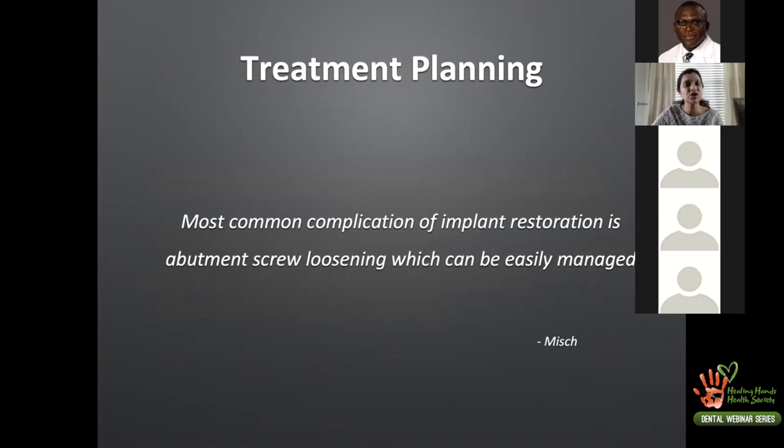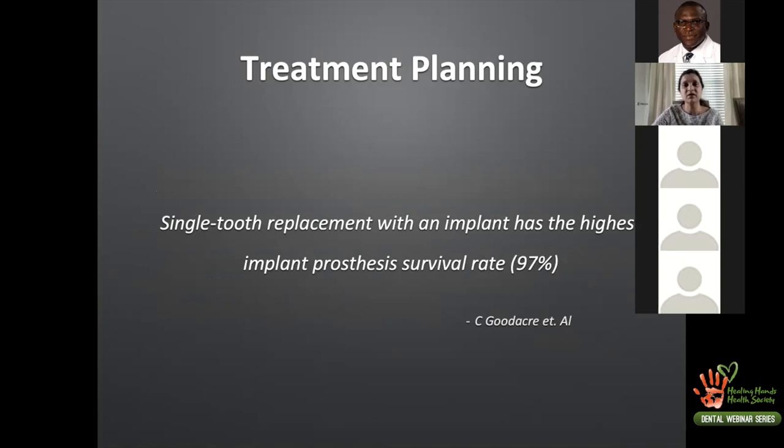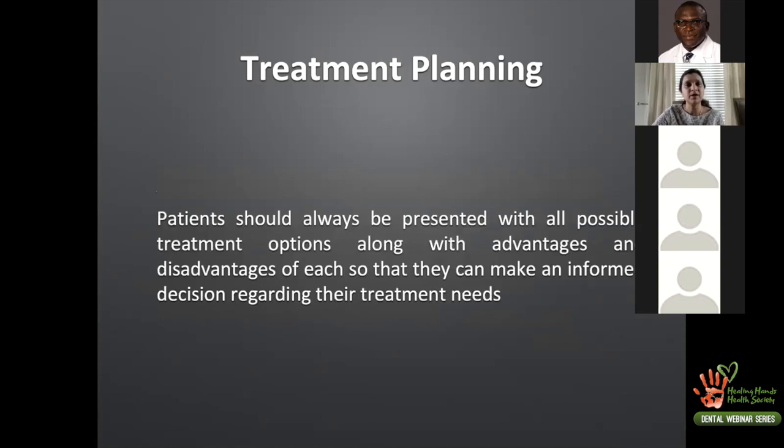According to Misch, the most common complication of implant restoration is abutment screw loosening, which is easily managed. Goodacre tells us that single tooth replacement with an implant has the highest implant-prosthesis survival rate of about 97%. Patients should always be presented with all possible treatment options along with the advantages and disadvantages of each, so they can make an informed decision.